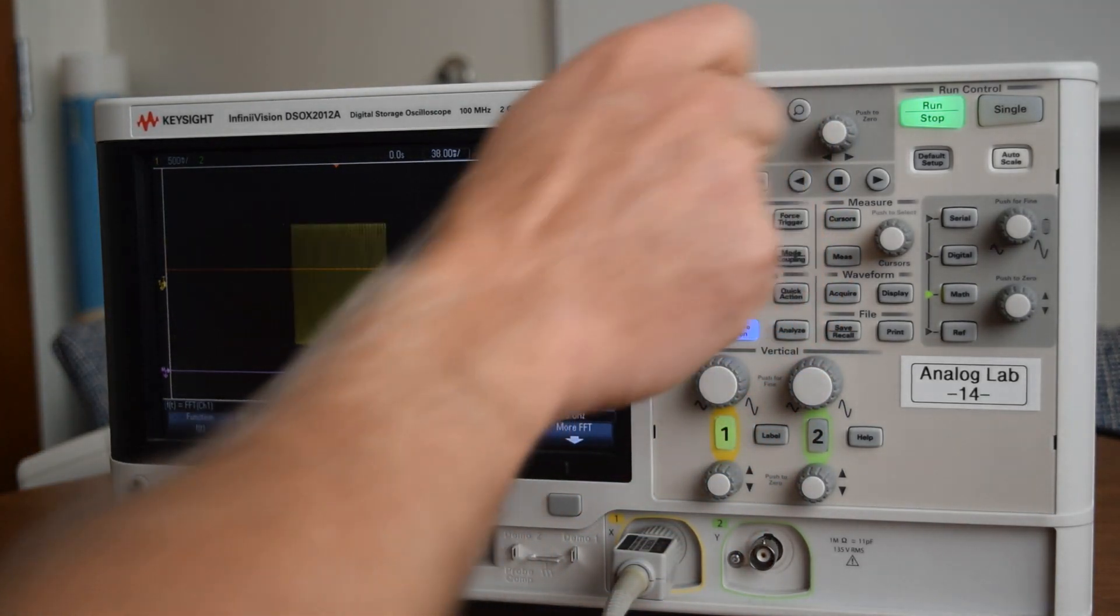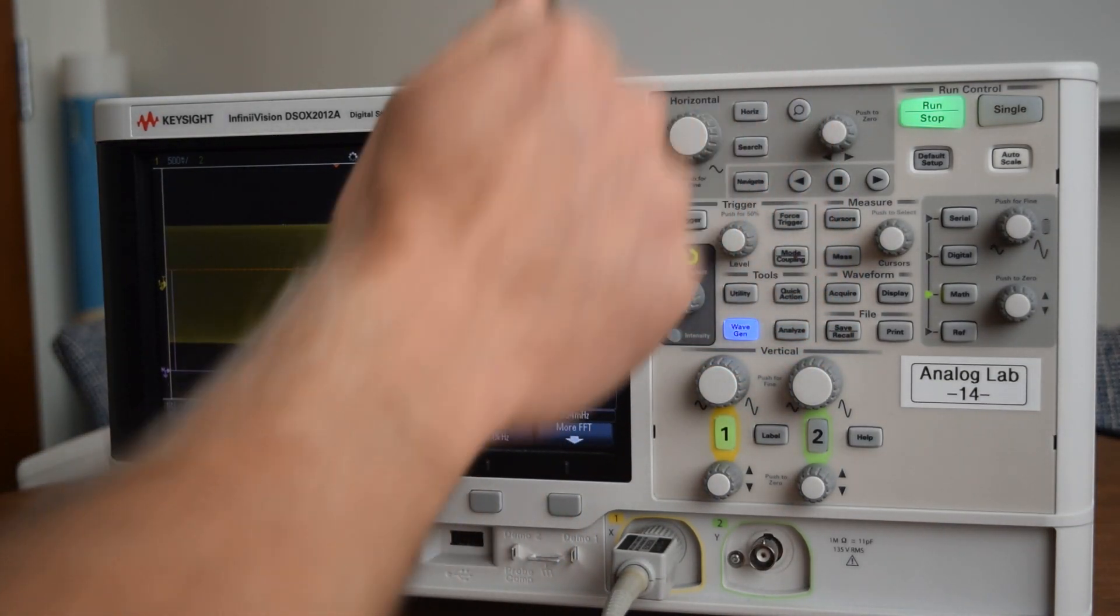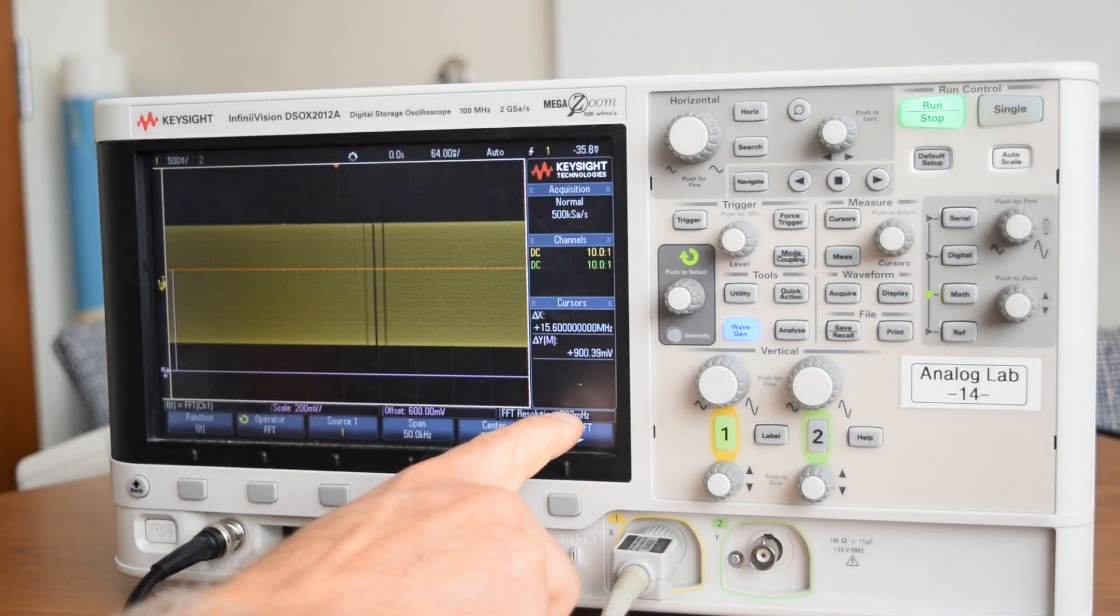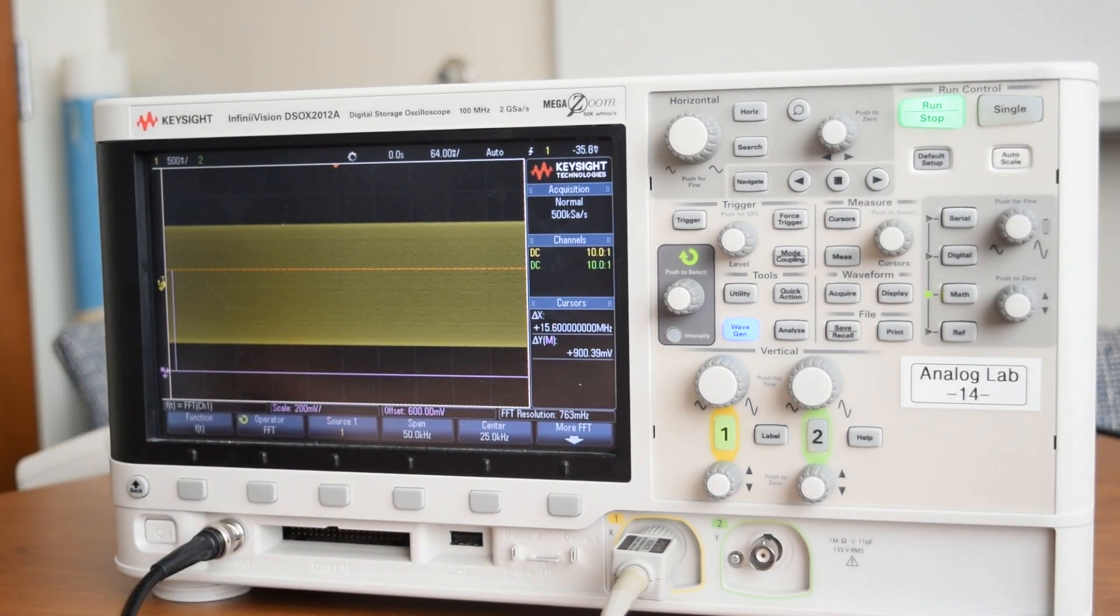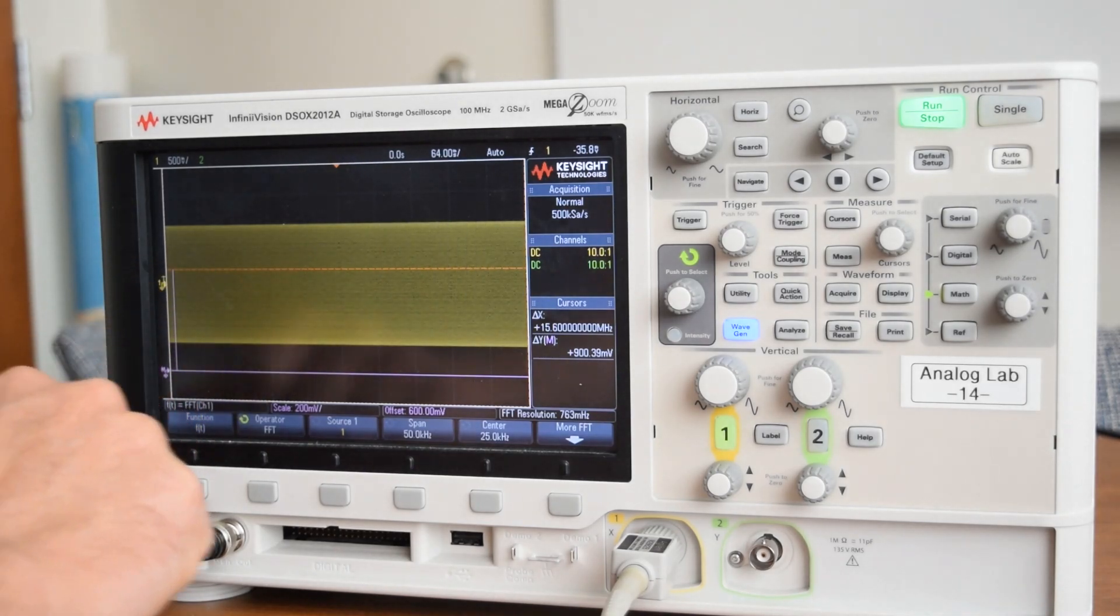So we want to zoom out. We want this span to be about 50 kilohertz or less. Here's 50 kilohertz, and then this gives us a resolution of about just under 1 hertz for the signal. And you can kind of see here is our purple signal.